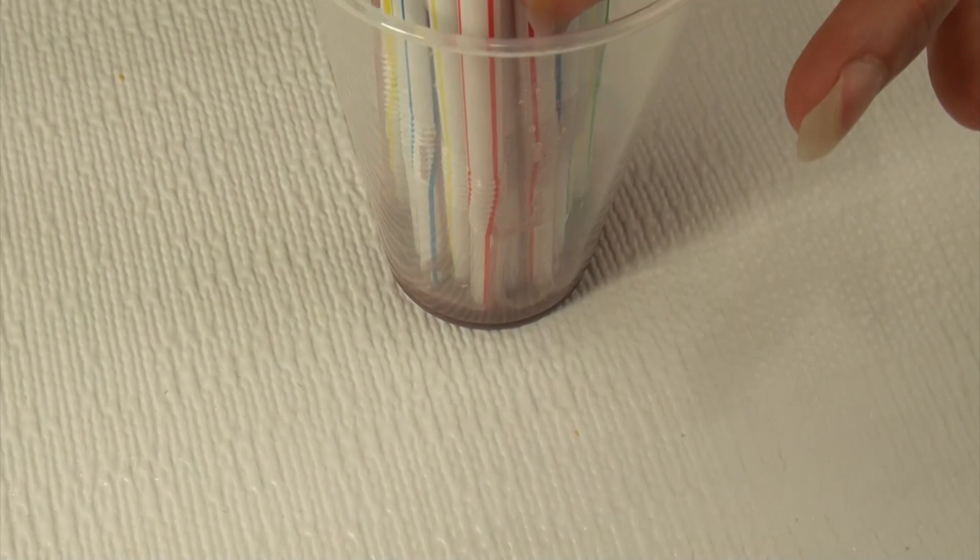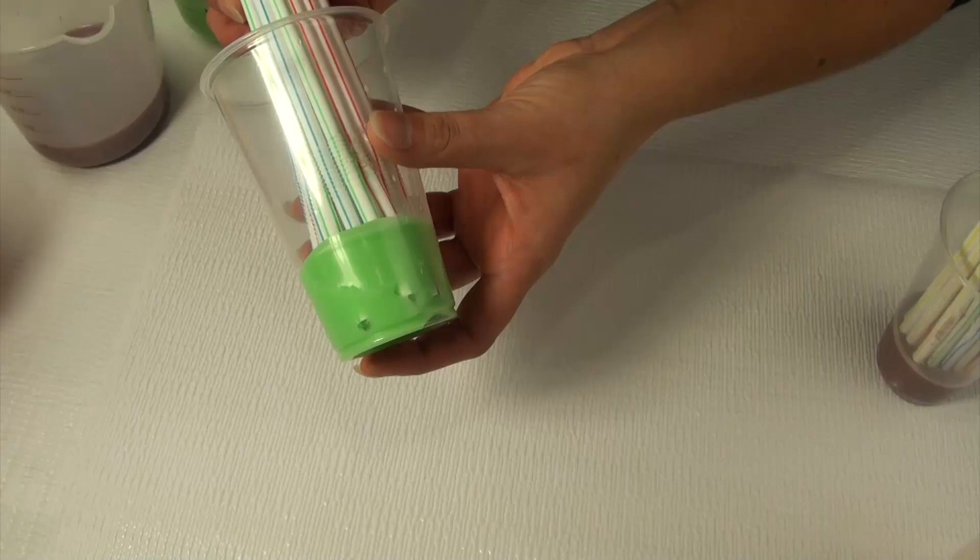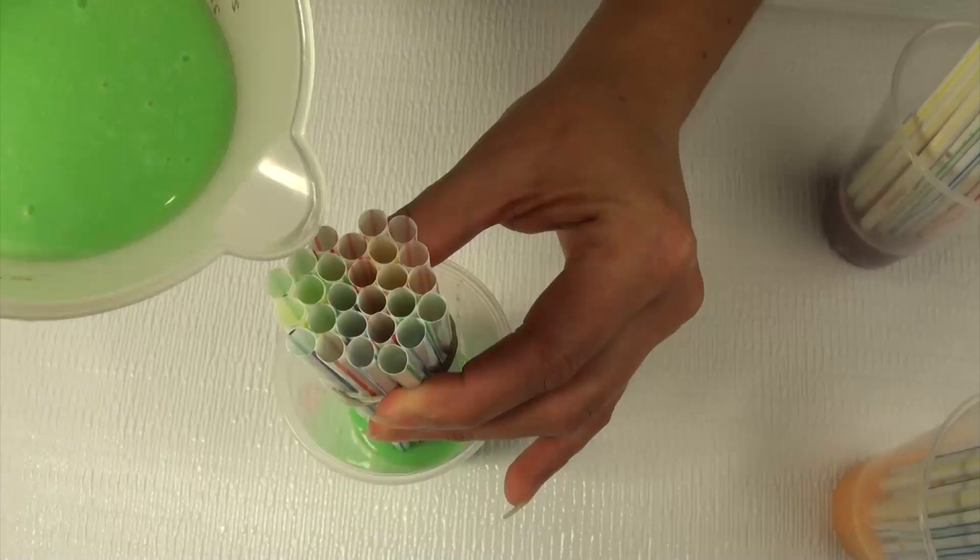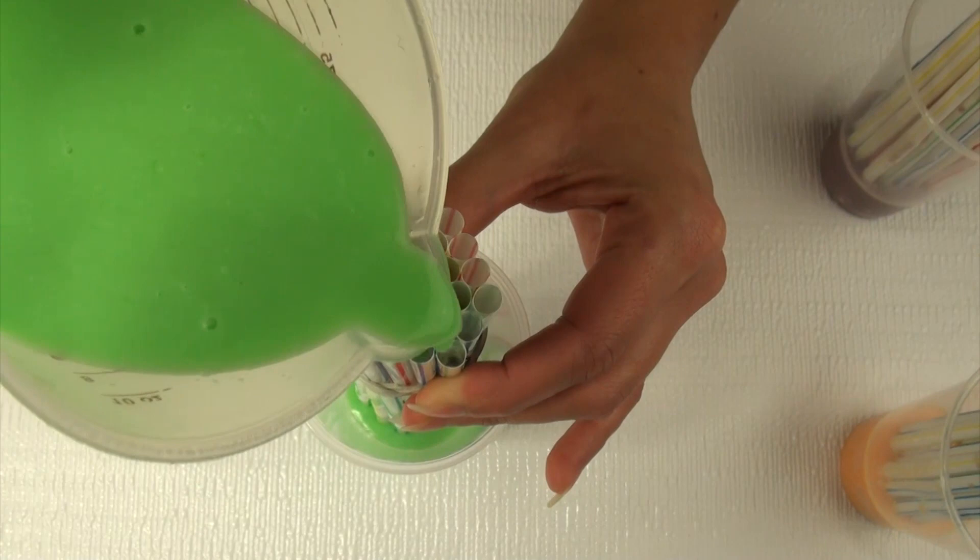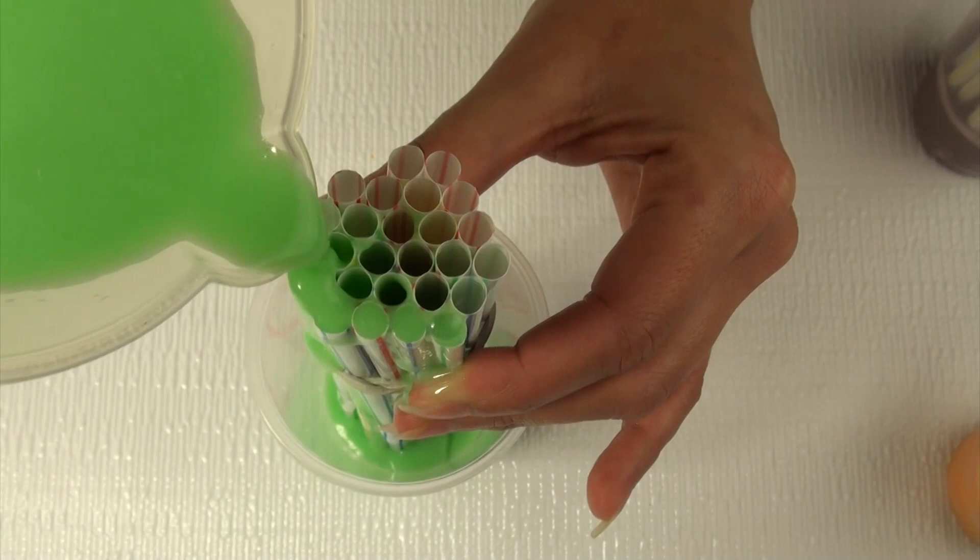When you pull the bunch of straws you can actually see the extra gelatin coming away from the cup. Once you're at that point, you can fill them with your remaining mixture. You can fill it with the same color, you could make multi-color worms if you wanted to, whatever you want to do here. Just fill them up and then put those back in the fridge once again.